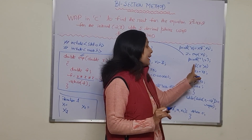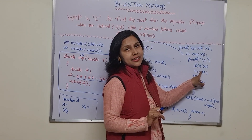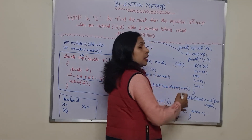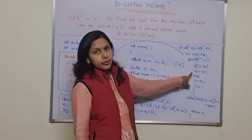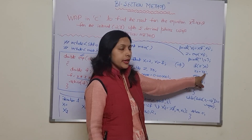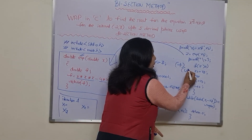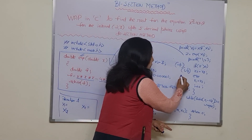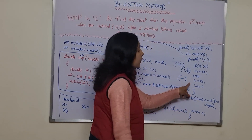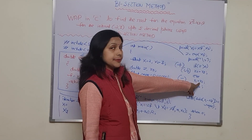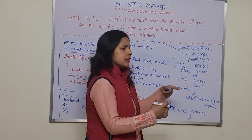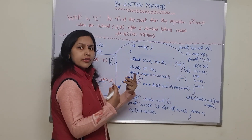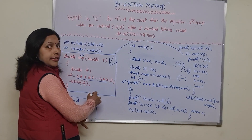The result is stored as z = eqn(x3). Then a comparison is made: if z is greater than 0 (positive), the upper bound x2 is replaced with x3. Otherwise (if negative), the lower bound x1 is replaced with x3. Then the iteration counter i is incremented, and the next iteration proceeds.